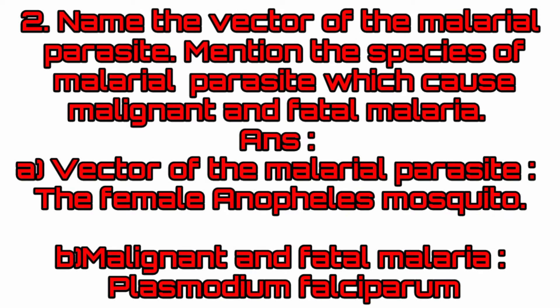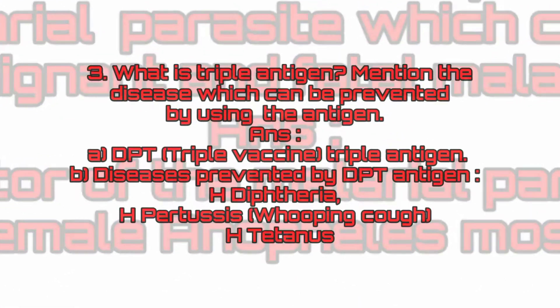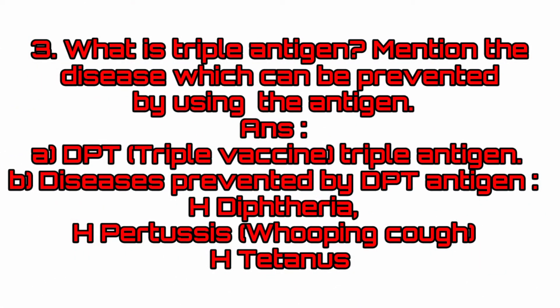Name the vector of the malarial parasite and mention the species causing malignant and fatal malaria. The vector of the malarial parasite is the female Anopheles mosquito. Malignant and fatal malaria is caused by Plasmodium falciparum. The triple antigen is DPT (triple vaccine). The diseases prevented by DPT are Diphtheria, Pertussis, and Tetanus.